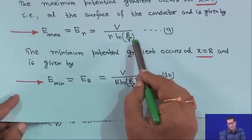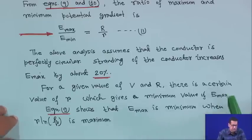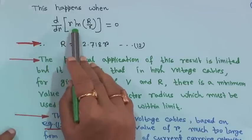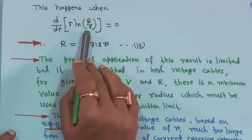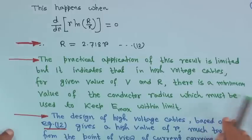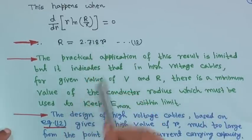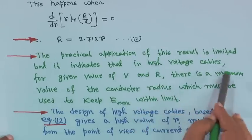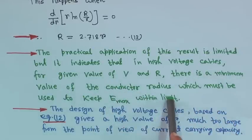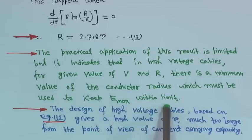To find the optimum r, take the derivative d/dr of [r × ln(R/r)] and set it to zero. This gives R = 2.718 × r, i.e., R/r = e. The practical application of this result is limited, but it indicates that in high voltage cables, for a given voltage and R, there is a minimum conductor radius which must be used to keep E_max within limits.